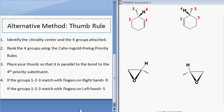The first step is the same. Identify the chirality center and the four groups attached. The second rule is the same also. Simply rank the four groups using Cahn-Ingold-Prelog priority rules. I'm going to assume you understand how to rank the groups.